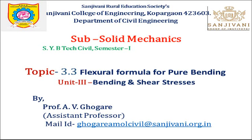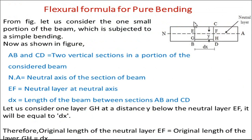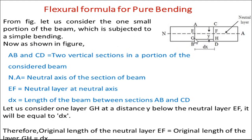Let us see this particular figure. This is a section of a beam — a very small portion of the total beam considered for analysis, and this section is subjected to simple bending. In this figure, AB is one section and CD is another section.